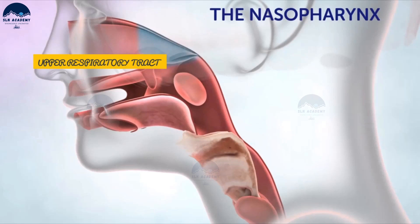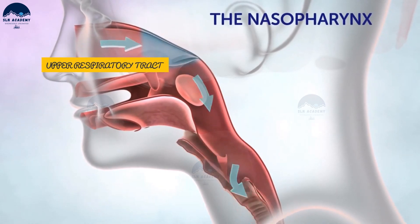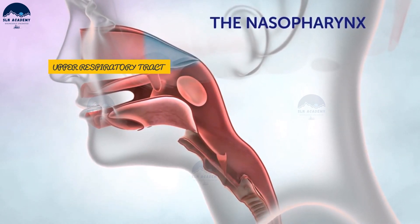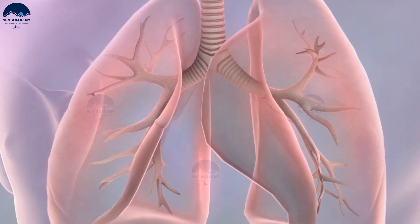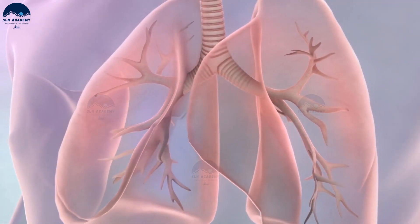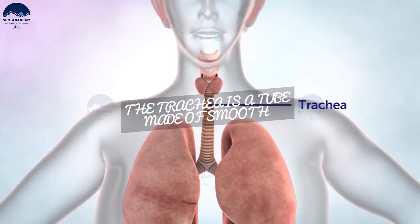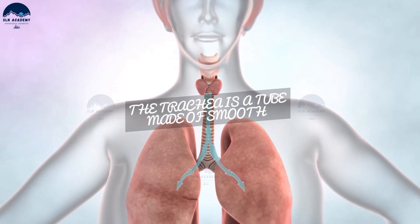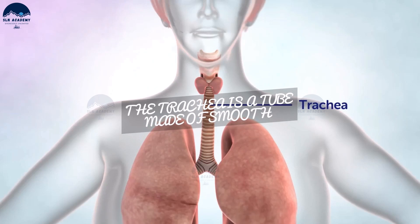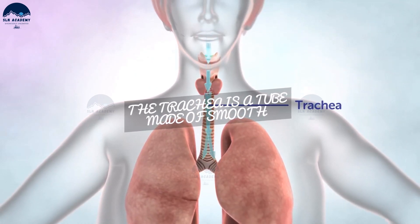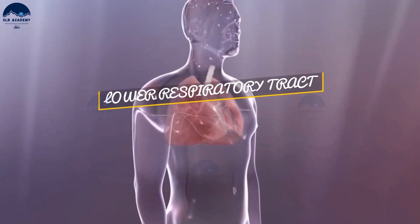Air first passes through the nose and the mouth, then through the larynx or voice box, then down the trachea, which is the windpipe, and into the lungs and comes out. The lower respiratory tract includes the lower parts of the larynx, including the cricoid cartilage, and the trachea. The trachea is a tube made of smooth muscle which brings air to the lungs. Many C-shaped pieces of cartilage surround the trachea to protect it and anchor it.